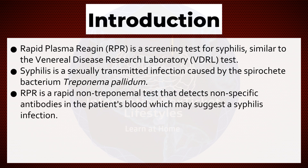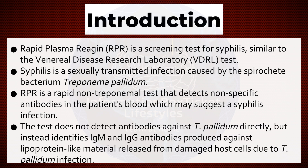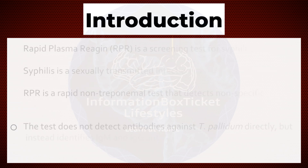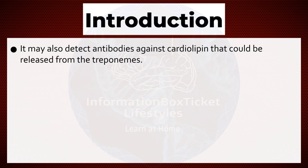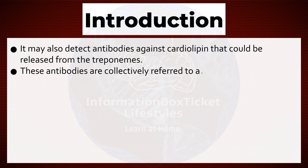Rapid Plasma Reagin is a rapid, non-treponemal test that detects nonspecific antibodies in the patient's blood, which may suggest a syphilis infection. The test does not detect antibodies against Treponema pallidum directly, but instead identifies IgM and IgG antibodies produced against lipoprotein-like material released from damaged host cells due to Treponema pallidum infection. It may also detect antibodies against cardiolipin released from the treponemes. These antibodies are collectively referred to as reagins.